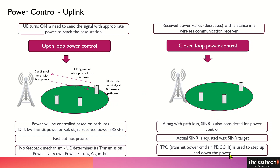On the other side, we have a closed loop power control system which is widely used in the network. Here, the feedback coming from the base station to the user also comes into the picture. The UE is transmitting to the base station, and the base station senses that the received power is not good enough. Then a transmit power command goes on the PDCCH, which tells that the power is less and needs to be increased. The step size is increased in this case, considering the target power and target SNR.